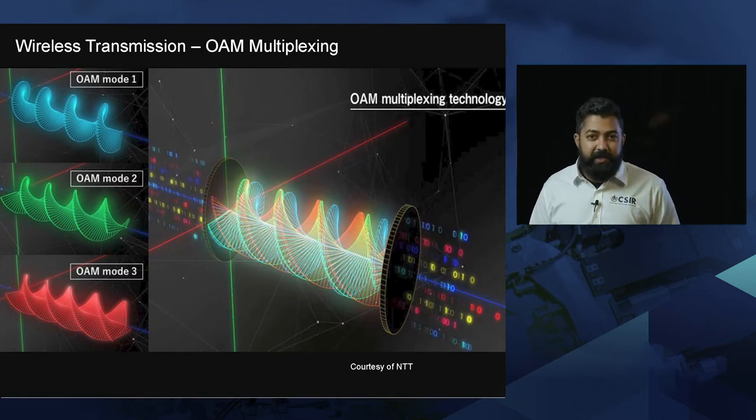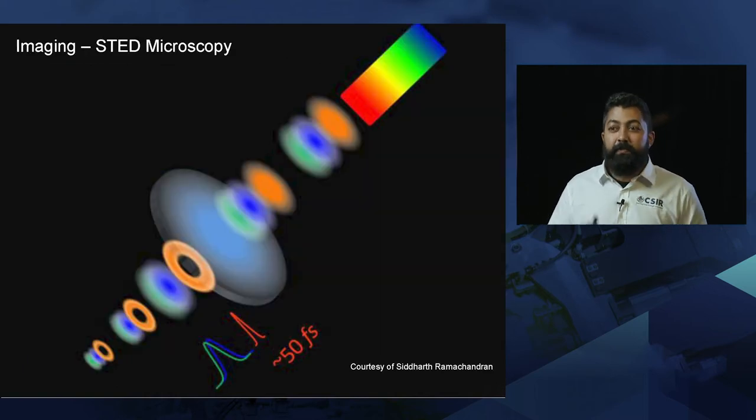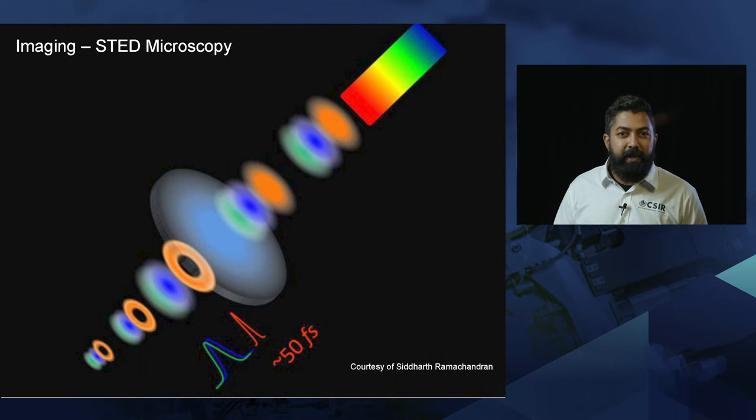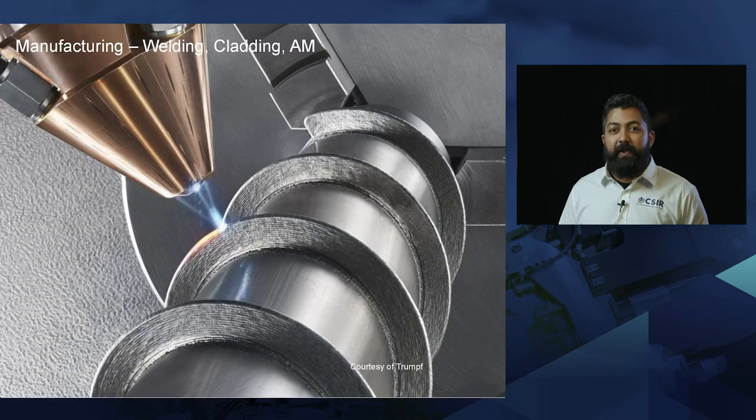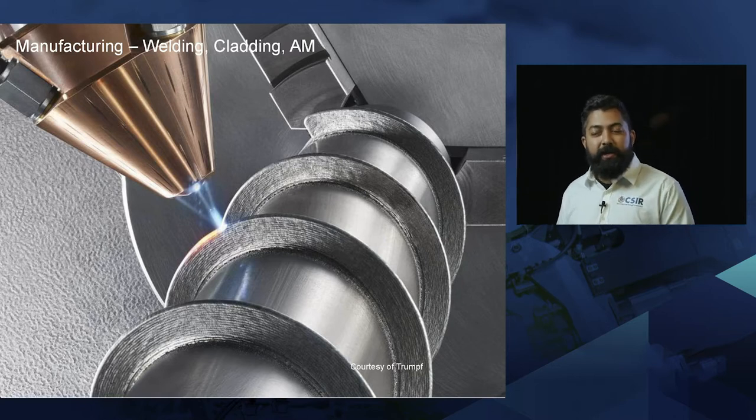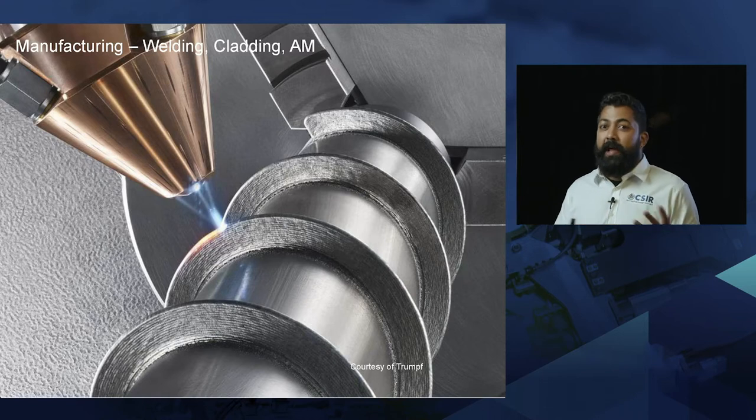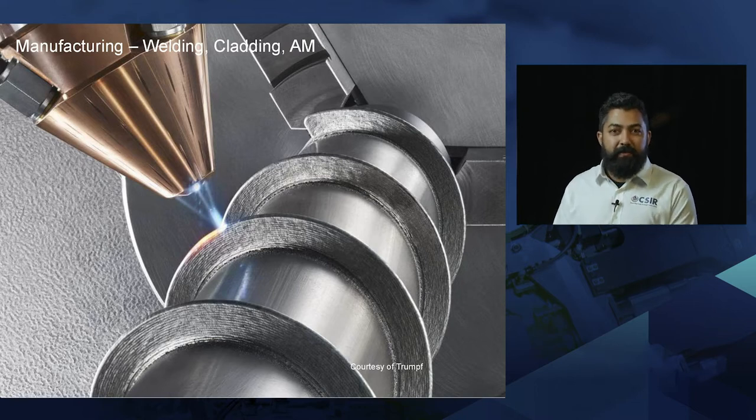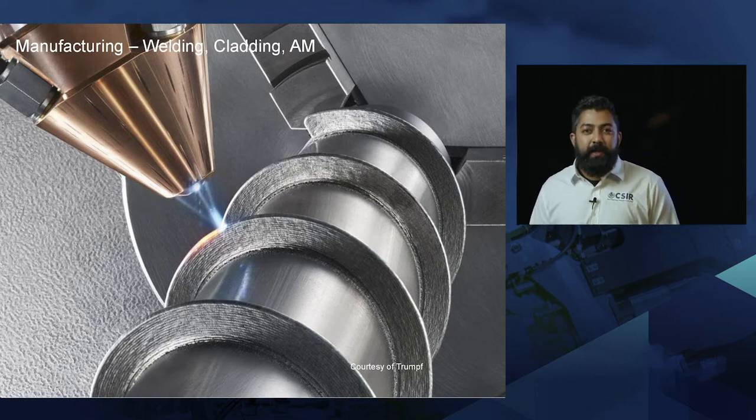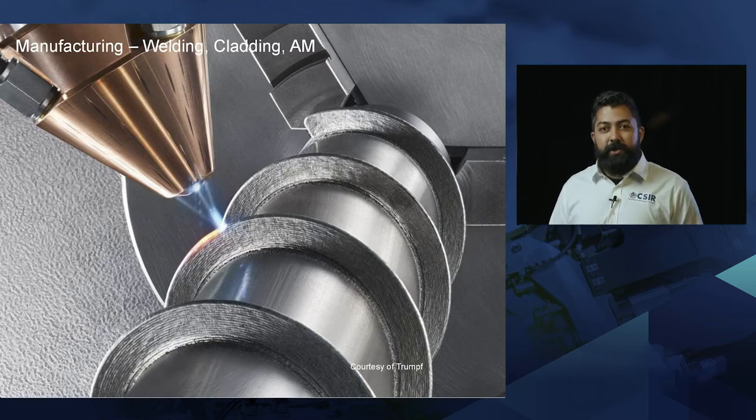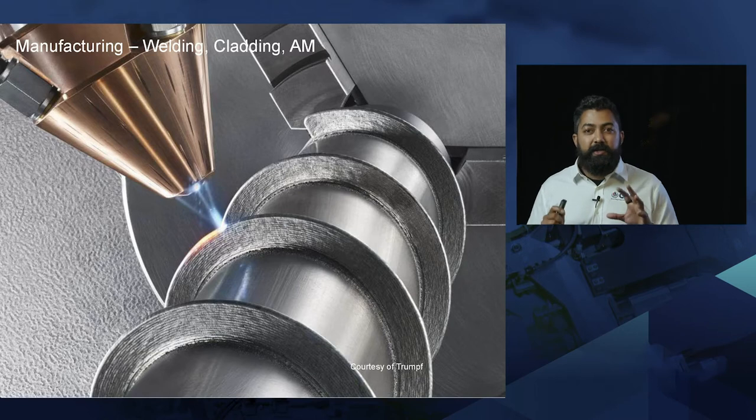If we have to look at imaging systems, in the stimulated emission depletion microscopy or STED microscopy, these vortex beams or annular beams have really enabled the lateral resolution to be improved. And finally, in manufacturing such as welding, cutting, cladding and even additive manufacturing or 3D printing, these shaped laser beams help reduce sputter when it comes down to welding, and if I had to go to a flat top beam or an annular beam, I can really control the temperature that gets transferred from the laser beam to the metal.